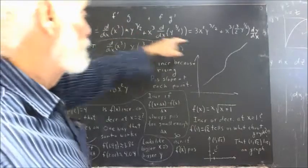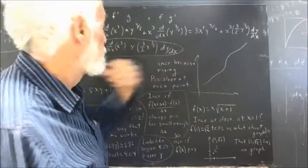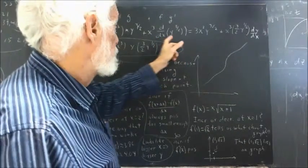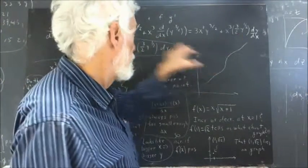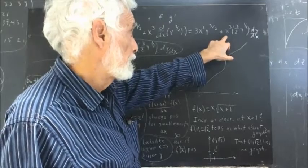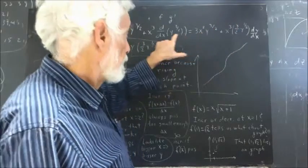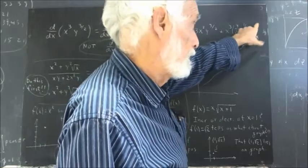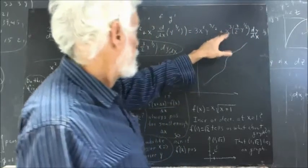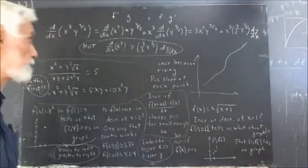This derivative is 3x squared times your y to the 3 halves. And this derivative is your 3 halves y to the 1 half, which is multiplied by your x cubed. Actually, the derivative of y to the 3 halves is 3 halves y to the 1 half times dy dx, then multiplied by the x cubed.